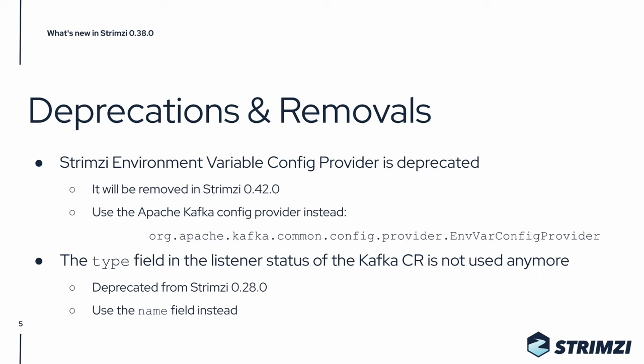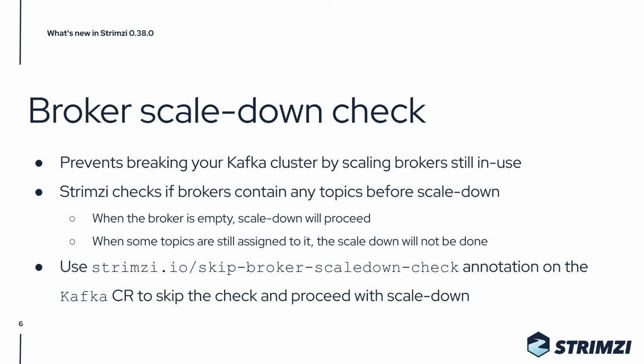With the removals and deprecations out of our way, we can now look at the new features. The first one is the Broker Scale Down Check. What we see sometimes among our users is that they scale down a Kafka broker that is not completely empty and still has some partition replicas assigned. When the Strimzi operator scales it down, these partition replicas might be missing and they might cause problems down the road, for example with rolling updates.